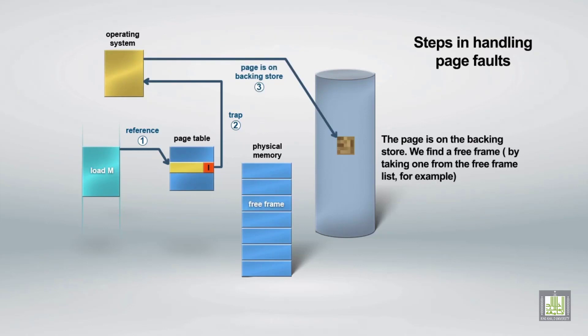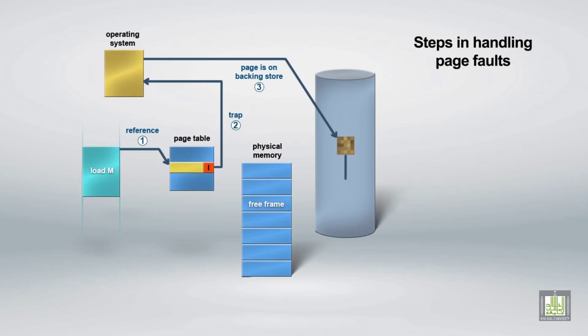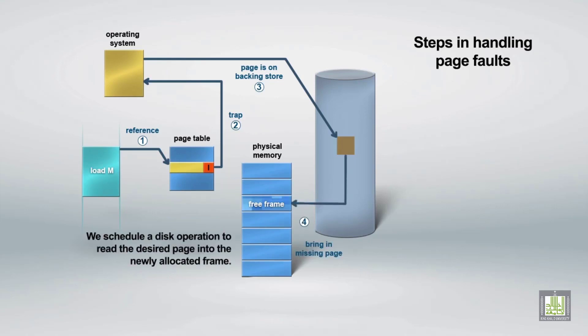For the pages on the backing store, we find a free frame by taking one from the free frame list. We then schedule a disk operation to read the desired page into the newly allocated frame.